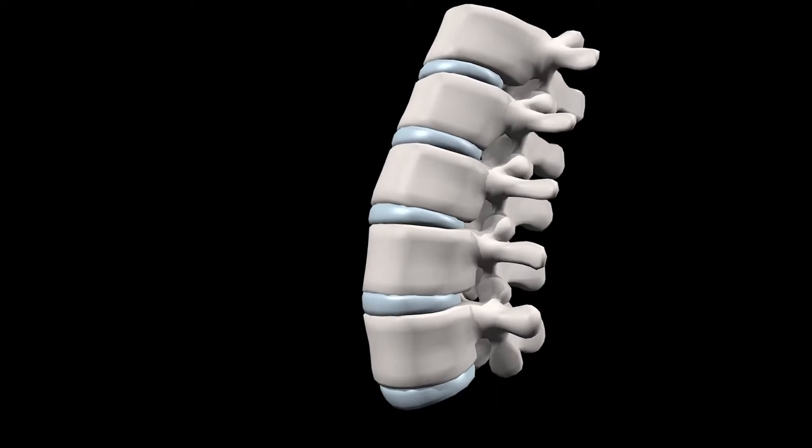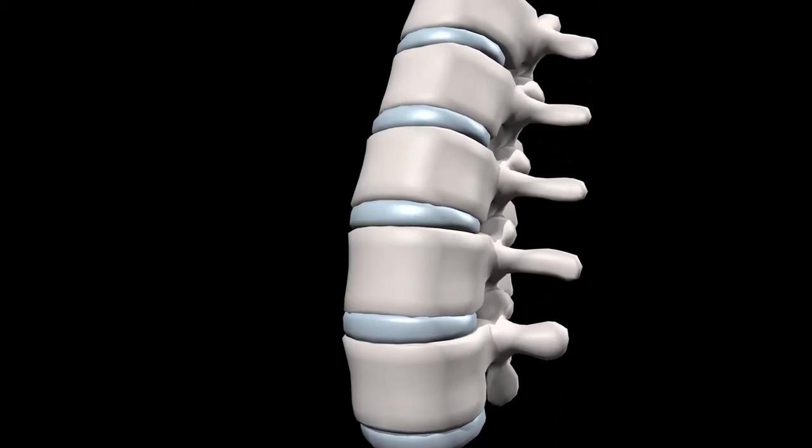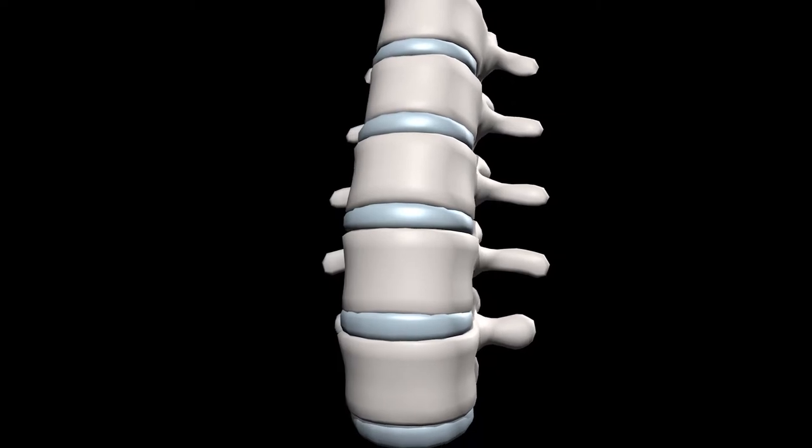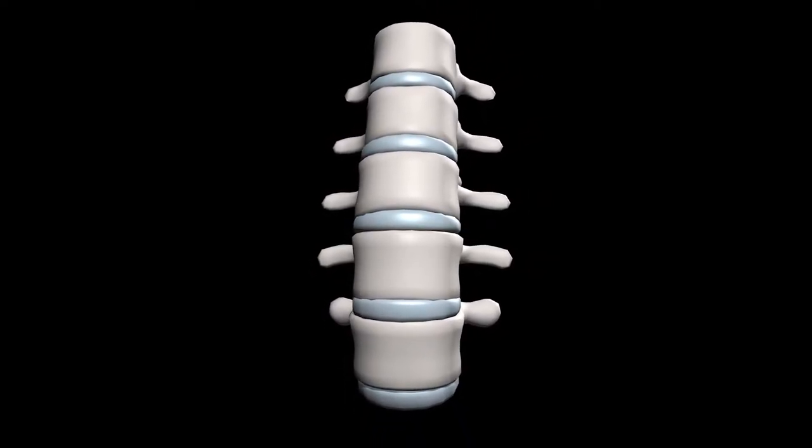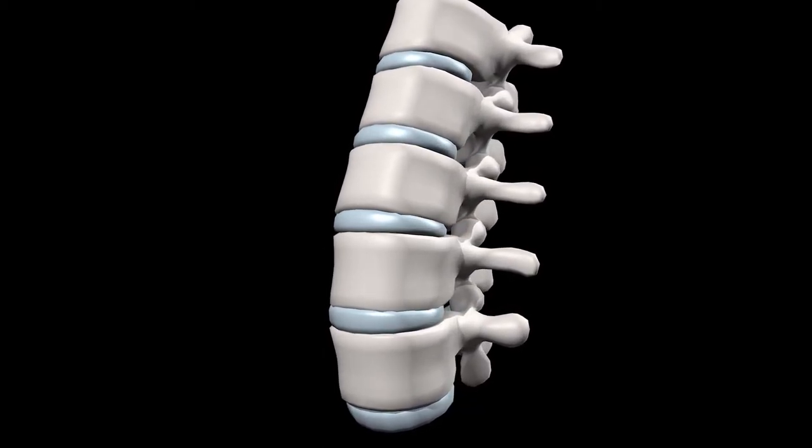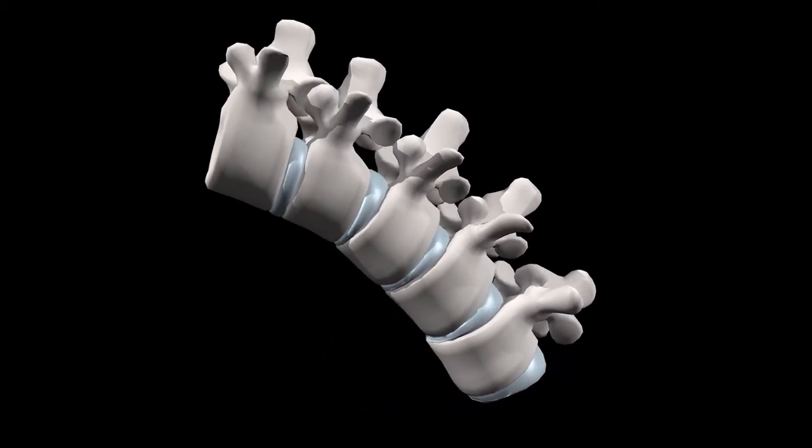So when we're lifting correctly, the pressure is applied evenly throughout the whole disc all the way through the spine. The problem comes when we start to lift incorrectly. We start to place too much pressure on one side of that disc.